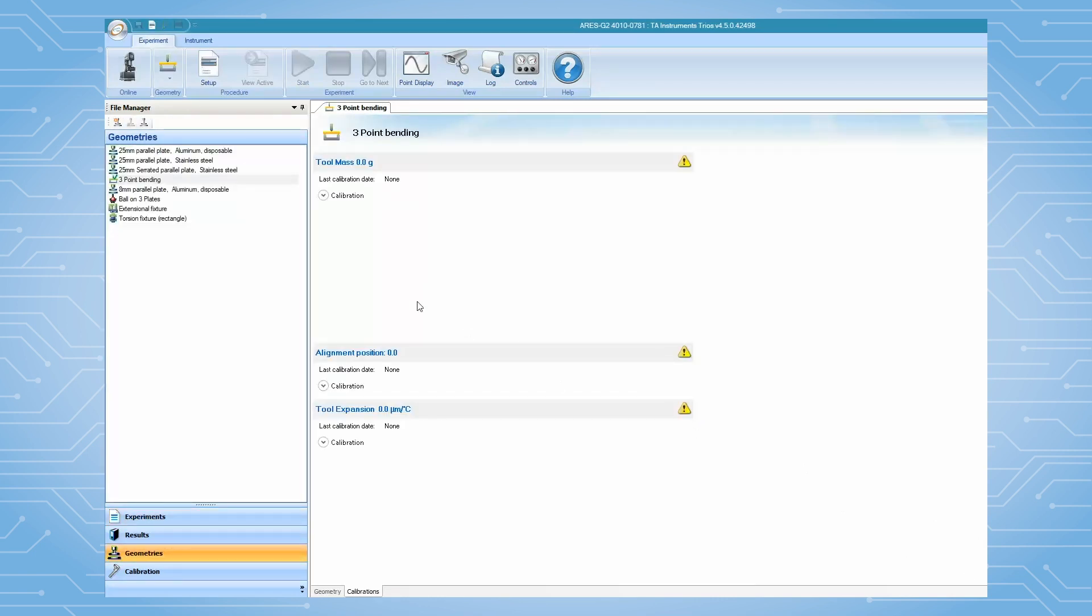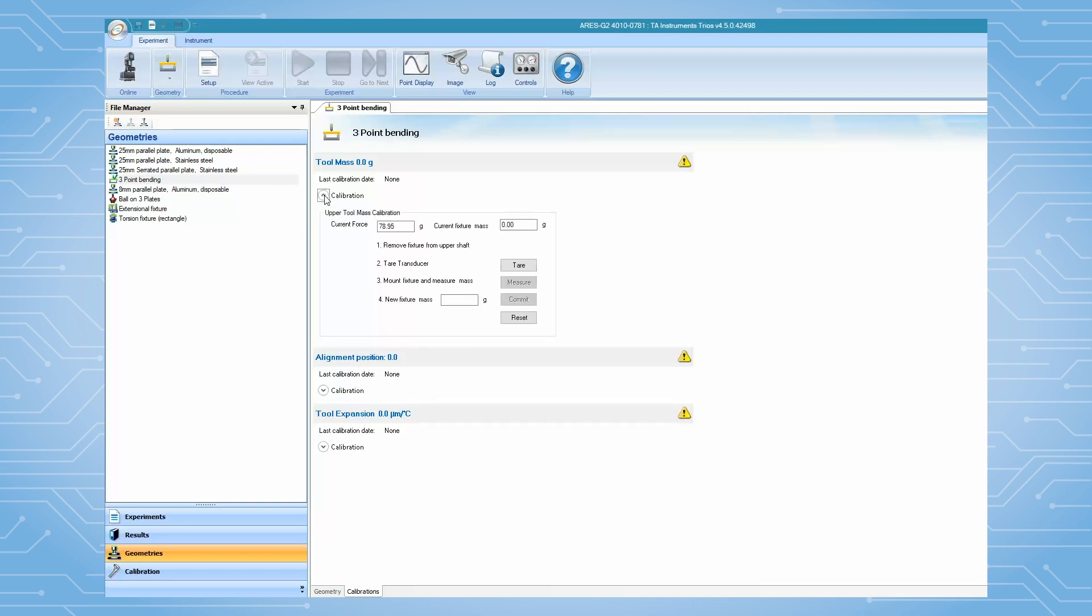Then, TRIO will automatically lead you to proceed for the clamp calibration.